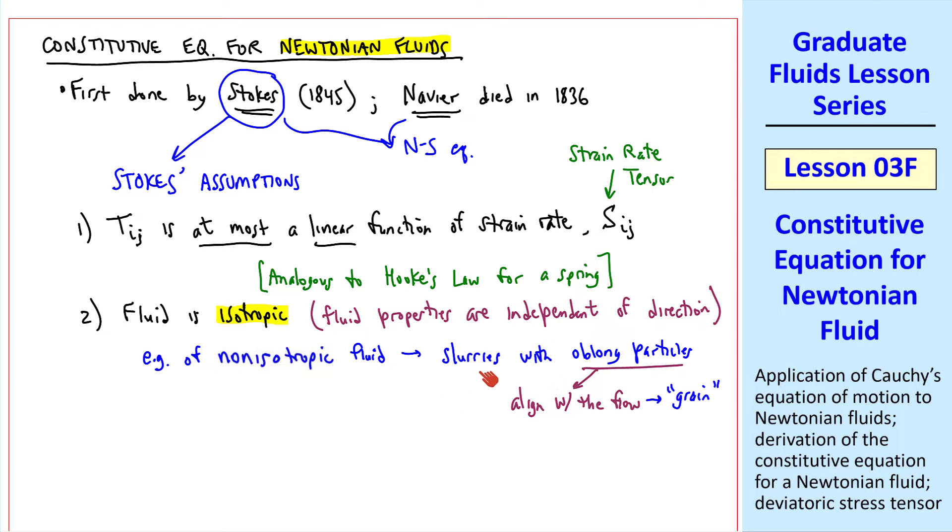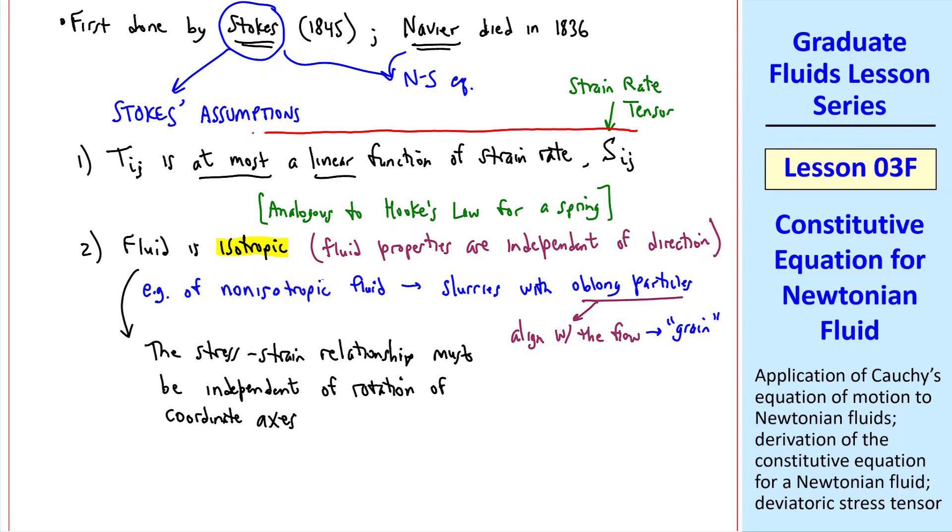These long particles tend to align with the flow. So there's kind of a grain in the flow, like the grain of a piece of wood. And this kind of fluid will behave differently in one direction than another. But we're going to talk only about isotropic flows. Mathematically, the stress-strain relationship must be independent of rotation of coordinate axes.